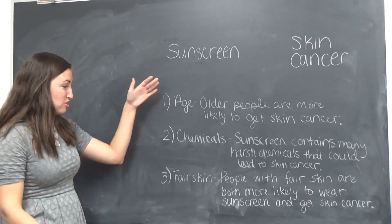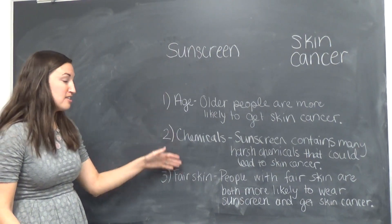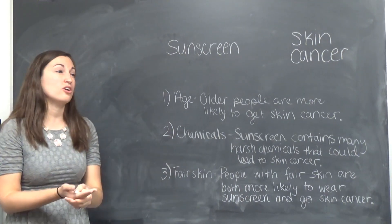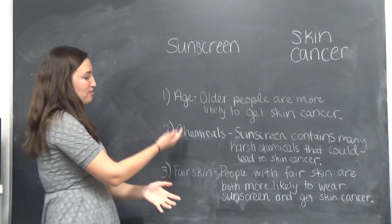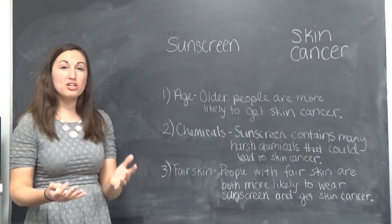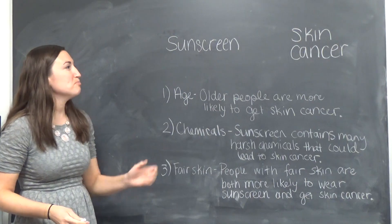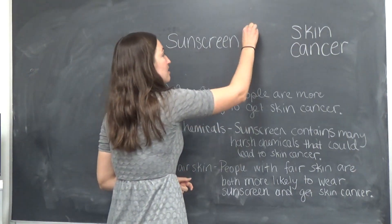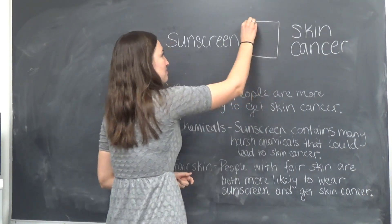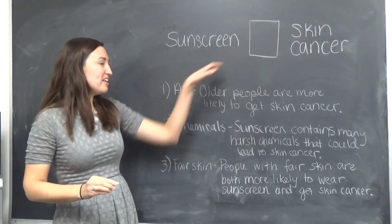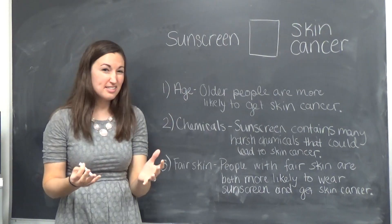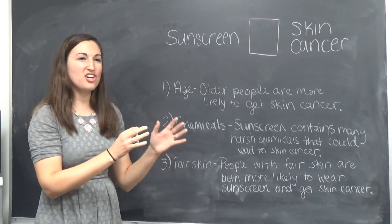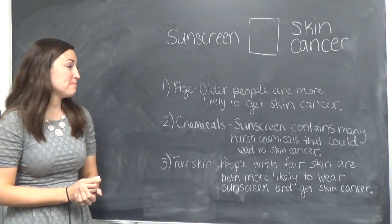So we have three different things here that we have to decide: are they confounders, causal links, or neither? We looked at how to do this in class with the diagram, so here's another diagram that might help. I'm going to put each of these in a box and decide which way the arrows go, rather than trying to predetermine which diagram they fit into — I'll just make my own.